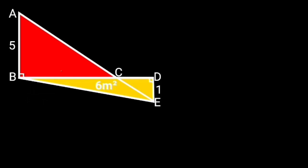In this question, we are given two right triangles, triangle ABC and triangle BDE, as shown in the figure. If AB is equal to 5 units, DE is equal to 1 unit, and the area of triangle BDE is given as 6 square meters, find the area of triangle ABC.